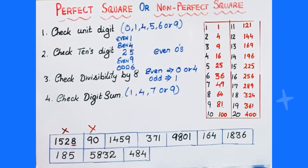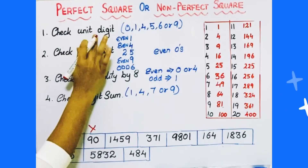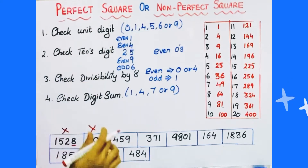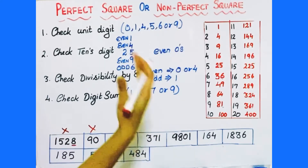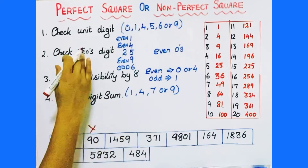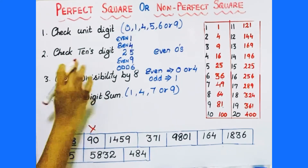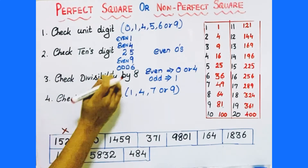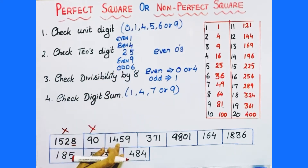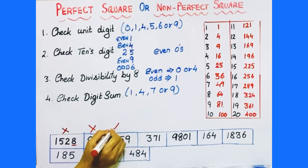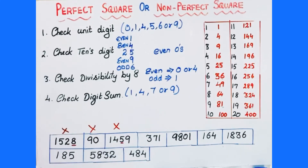Next number is 1459. First test: check the unit digit — it is 9, so it passes. Next test: check the tens place. With unit digit 9, the tens place should be an even number. But here it is not an even number. So it fails here — 1459 is not a perfect square.